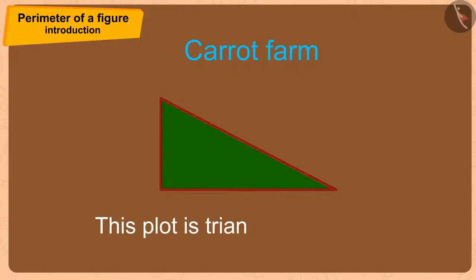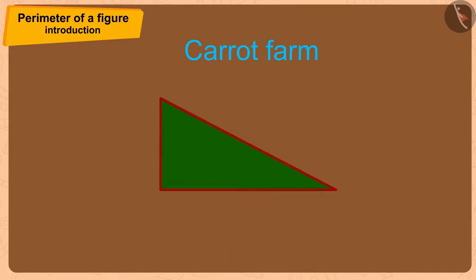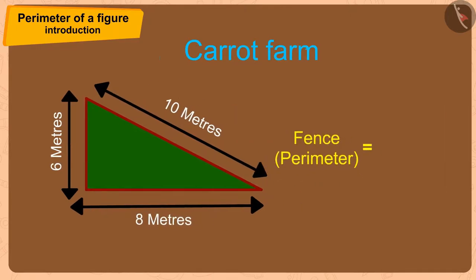This plot is triangular-shaped. Therefore, to find the perimeter of its fence, we only have to add the length of its edges. In this way, to fence this plot, Bhola needs to add the sides 6, 10 and 8. Therefore, he needs a 24-meter-long wire.